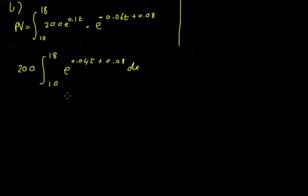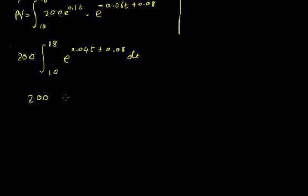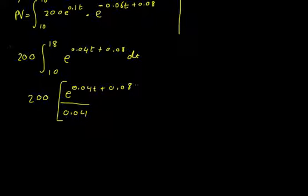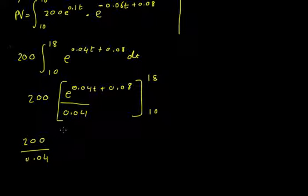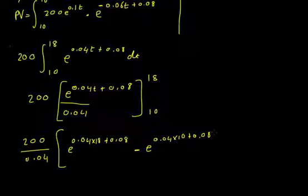The integral of all that is the whole thing divided by its derivative, so we can find it's e of 0.04t plus 0.08 divided by 0.04 over there, that's between 18 and 10. We can take out 1 over 0.04, because we don't need it to be there the whole time, and we can sub 18,